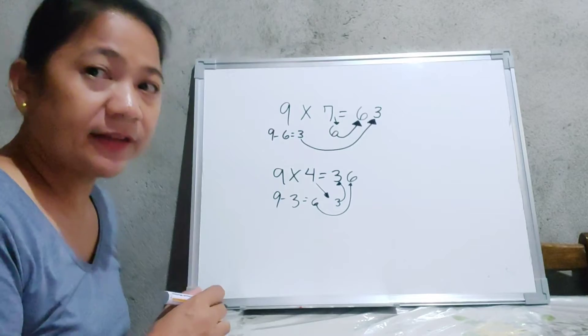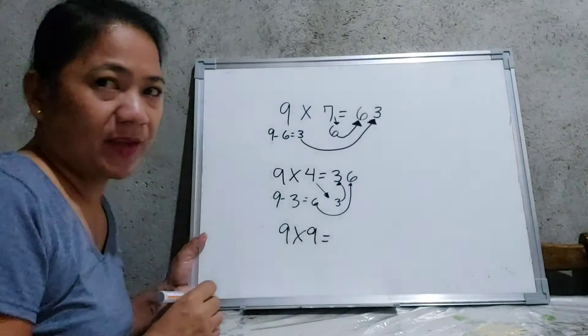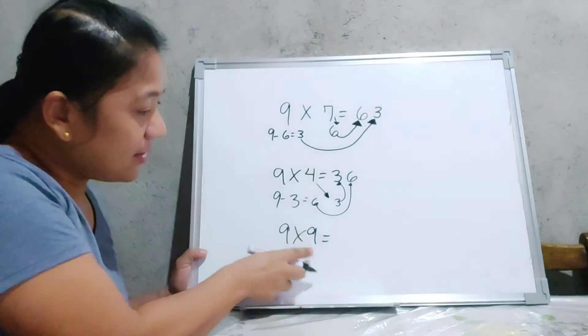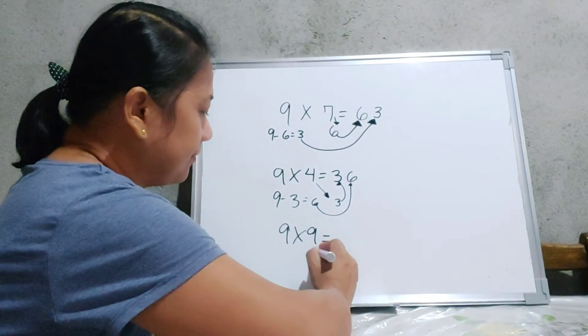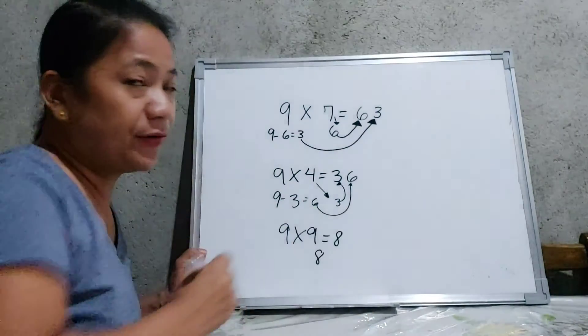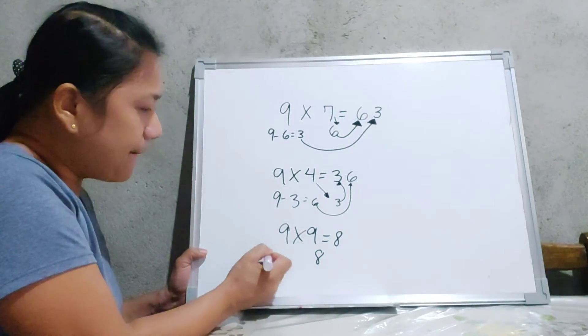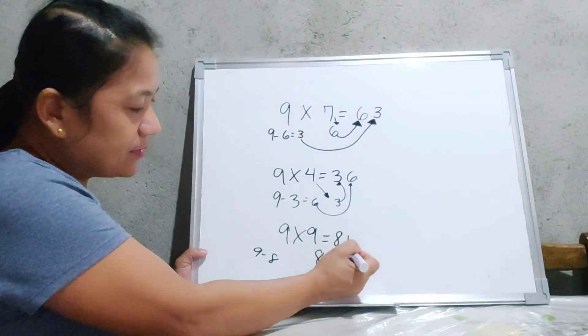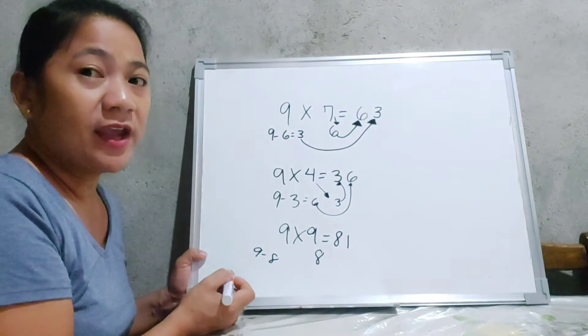So let us write 9 times 9. So again, think the number that comes before 9. So the answer is 8. So I will write then again the number 8 as the first digit of my answer. Afterwards, 9 minus 8 is equal to 1. So the answer or the product of 9 times 9 is equal to 81.